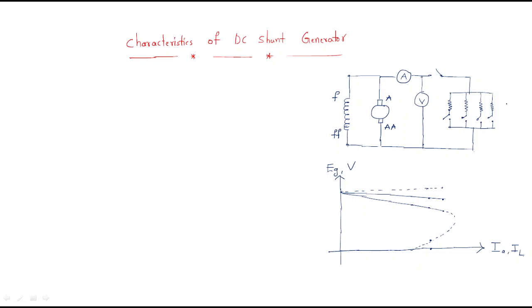We are using four loads, each with its own switch. The complete load also has a switch. To measure the voltage across the load we use a voltmeter, and to measure the current through the load we use an ammeter.